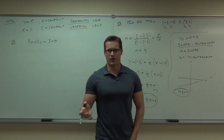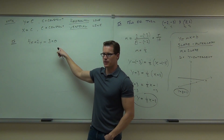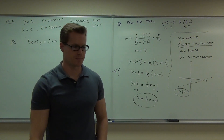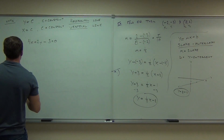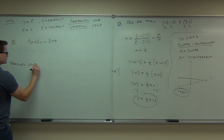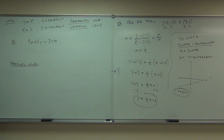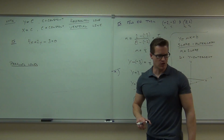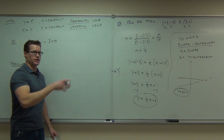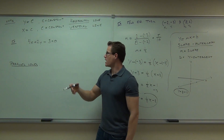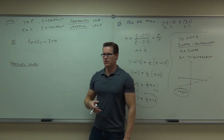Here we have an equation that's kind of in standard form. Is there a way you can put this into slope-intercept? Go ahead and solve for Y. What would you do first if you're trying to solve that for Y? Isolate it — you're trying to isolate Y. You could add 3, then subtract 4X, then divide by 2. Another way: you could subtract 2Y, which will probably eliminate a step.